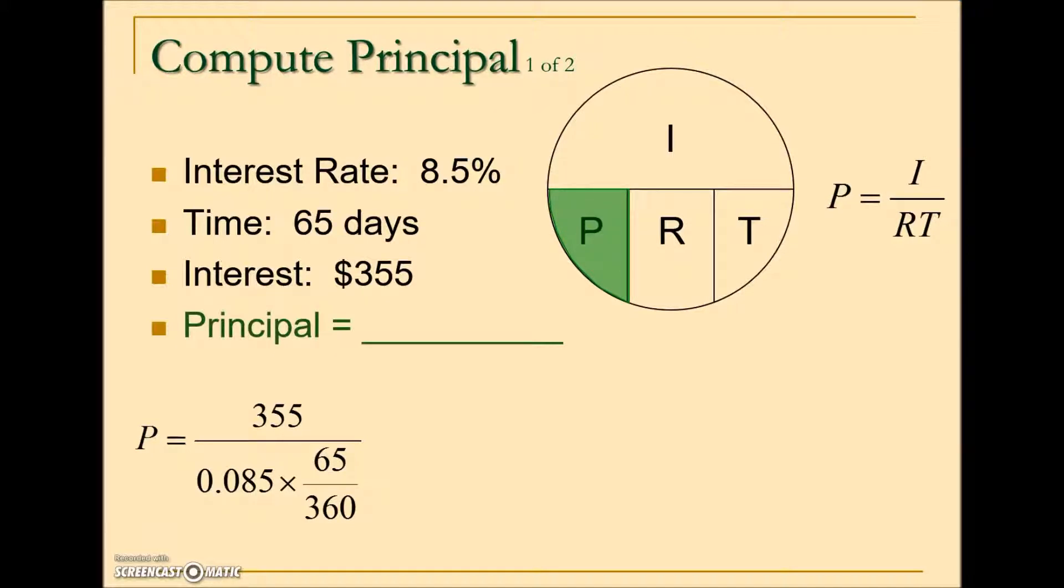Plugging in the values given in this problem, in place of I we put the interest 355, interest rate expressed as a decimal is here in the denominator 0.085, times time expressed as a year. Since they gave it to us as days, we must convert this into a portion of a year, and that's why we have the denominator 360. This looks a little intimidating in that we have a fraction in the denominator. Anytime you have a fraction in the numerator or denominator, we call this a complex fraction.